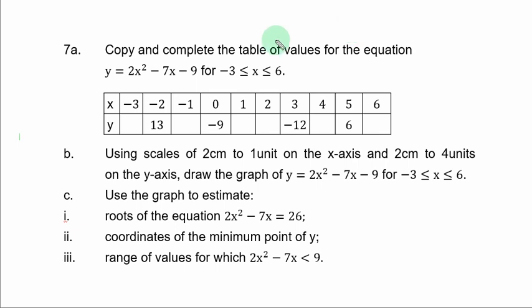Question 7a: copy and complete the table of values for the equation y = 2s² - 7s - 9 for -3 ≤ s ≤ 6. There is a range of values of s. You have the table of values with some y values missing and you are expected to solve for them.